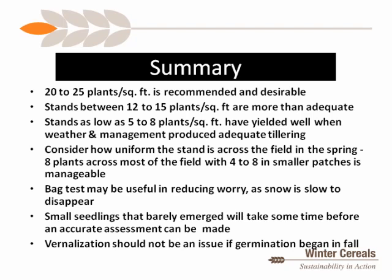In summary, the optimum for winter wheat is 20 to 25 plants per square foot. Stands between 12 and 15 per square foot are more than adequate most years. Stands as low as five per square foot have yielded well if conditions are conducive to tiller development. Consider how uniform the stand is across the field. Big patches of stand loss require a strategy — it's not a good idea to leave patches to weeds. Some have planted spring wheat in patches, but harvesting two classes of wheat simultaneously is challenging.